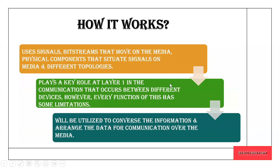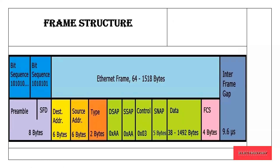Now we will see how Ethernet works. At the physical layer, it uses signals, bit streams, and physical components, and provides information about different topologies. At the MAC layer, it gets the information and arranges the data for communication over the layer. The LLC — logical link control — is independent of physical equipment and is used for the process of communication. It passes data from the upper layer to the lower layer and ensures it reaches the destination node successfully.